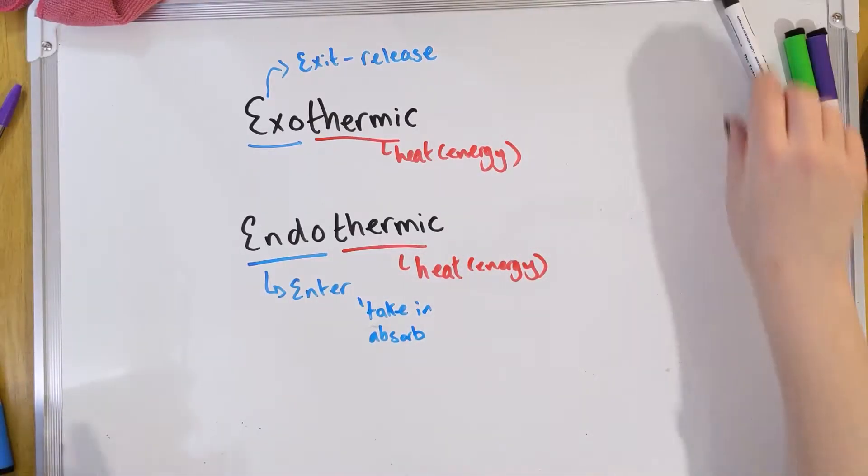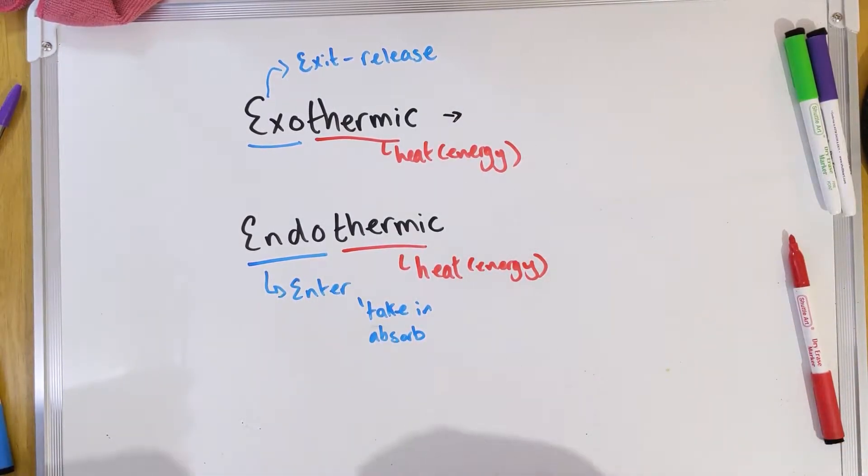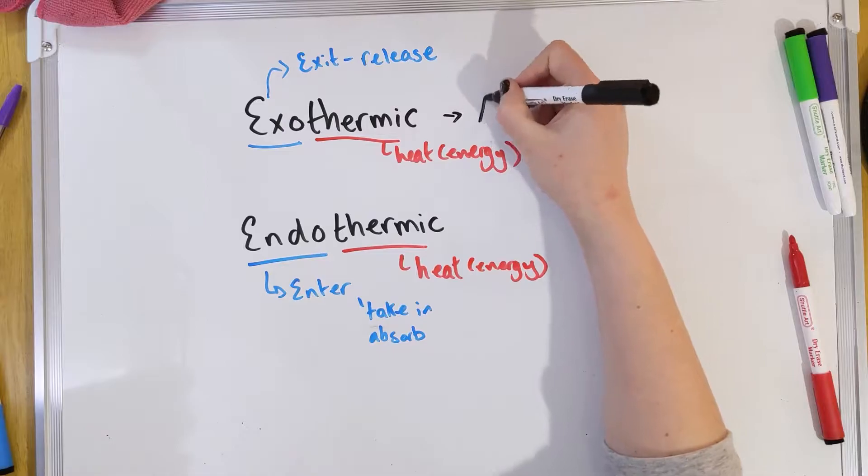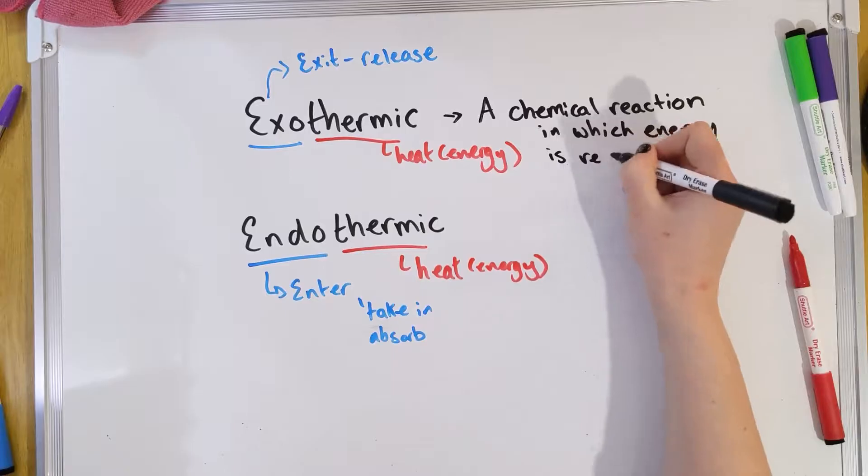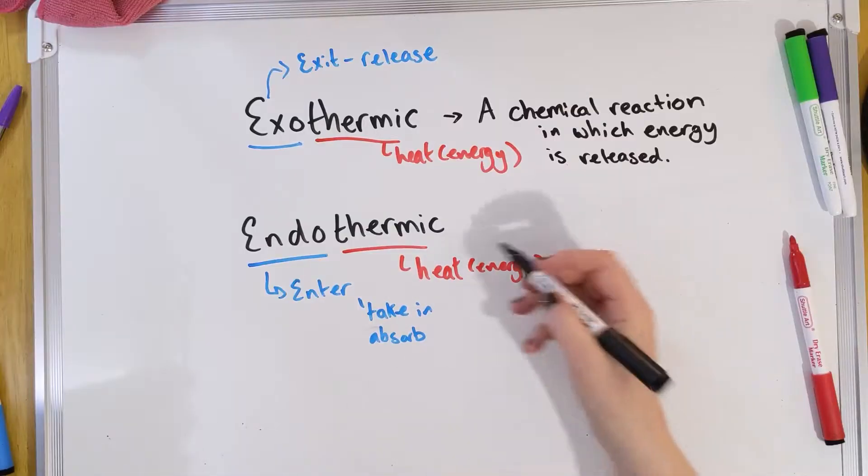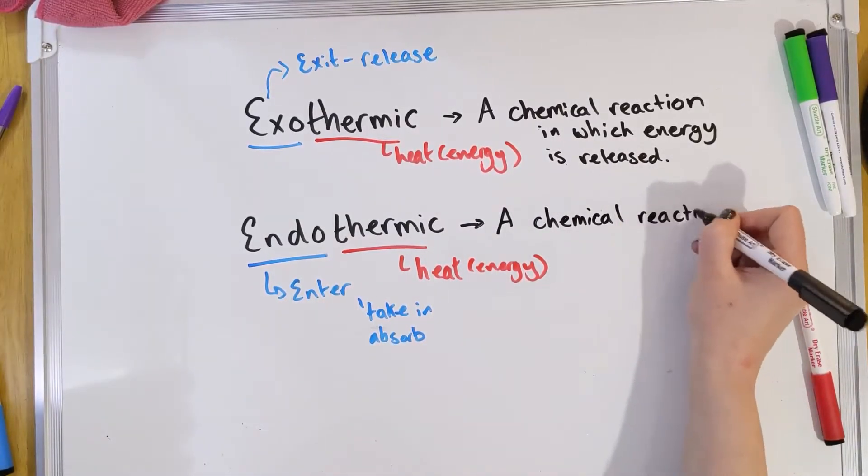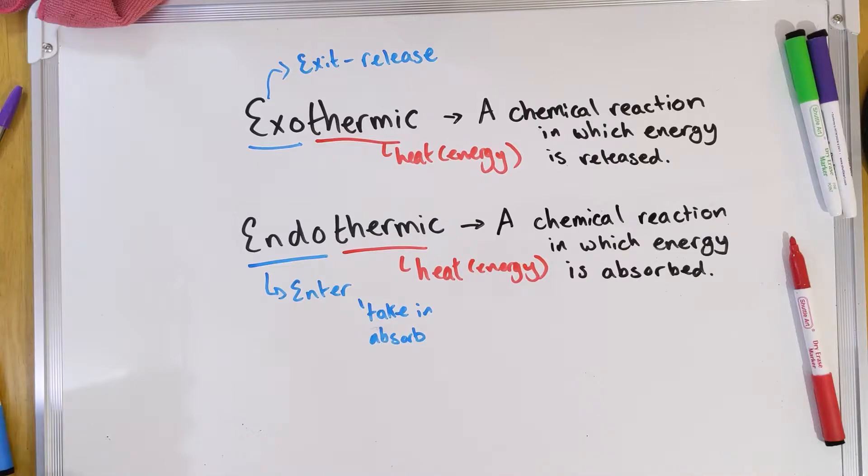So now we know what the different parts of these terms mean, we can put them together. So exothermic is any reaction that gives out heat, gives out energy during the chemical reaction itself. And using that same logic, endo entering heat. So that's a chemical reaction where energy, heat enters. So the substance will get hotter. Okay, so now they're defined, we're going to go on to some examples of them and how they work.